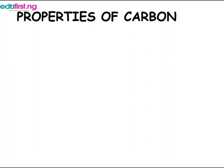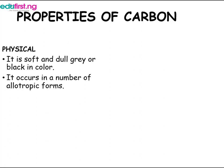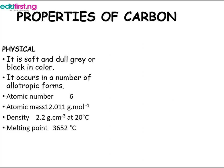Now let's look at the properties of carbon. Firstly, the physical properties. Carbon is soft and dull gray or black in color. It occurs in several allotropic forms — the different allotropes of carbon are amorphous carbon, graphite, and diamond. Carbon has an atomic number of 6 in the periodic table and an atomic mass of 12 grams per mole. The density of carbon at 20 degrees Celsius is 2.2 grams per cubic centimeter, a melting point of 3,652 degrees Celsius, and a boiling point of 4,827 degrees Celsius.